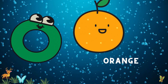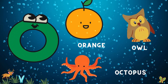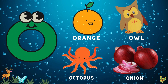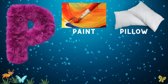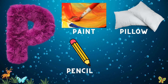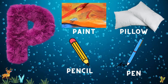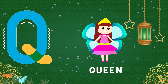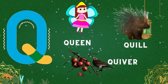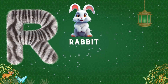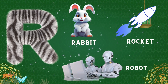O for orange, owl, octopus, and onion. P for paint, pillow, pencil, and pen. Q for queen, quill, and quiver. R for rabbit, rocket, robot.